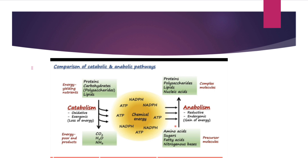اب catabolism اور anabolism کا comparison دیکھتے ہیں۔ Protein, carbohydrate اور lipids energy yielding nutrients ہوتے ہیں۔ Catabolism کا process oxidative ہوتا ہے اور اس میں loss of energy ہوتی ہے جسے exergonic بھی کہتے ہیں۔ اس میں ATP اور NADPH energy کے طور پر release ہوتے ہیں، اور electron transport chain میں carbon dioxide، water molecule اور NH3 release ہوتے ہیں۔ Anabolism میں simple molecules جیسے amino acids, sugars, fatty acids, اور nitrogenous bases سے complex molecules بنتے ہیں۔ اس میں reduction اور gain of energy ہوتی ہے، اور catabolism کی released energy استعمال ہو کر proteins, lipids اور polysaccharides بناتی ہے۔